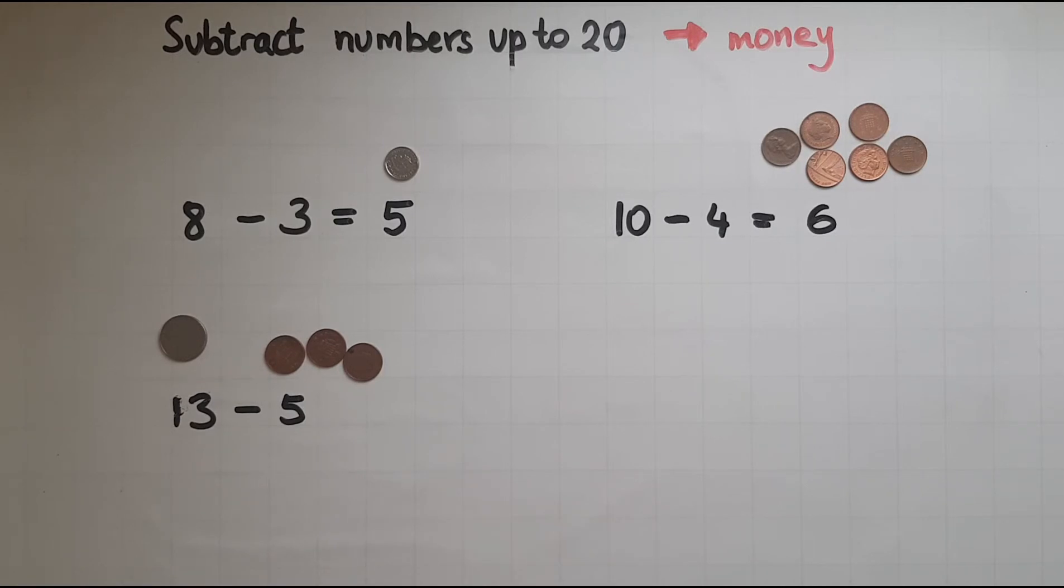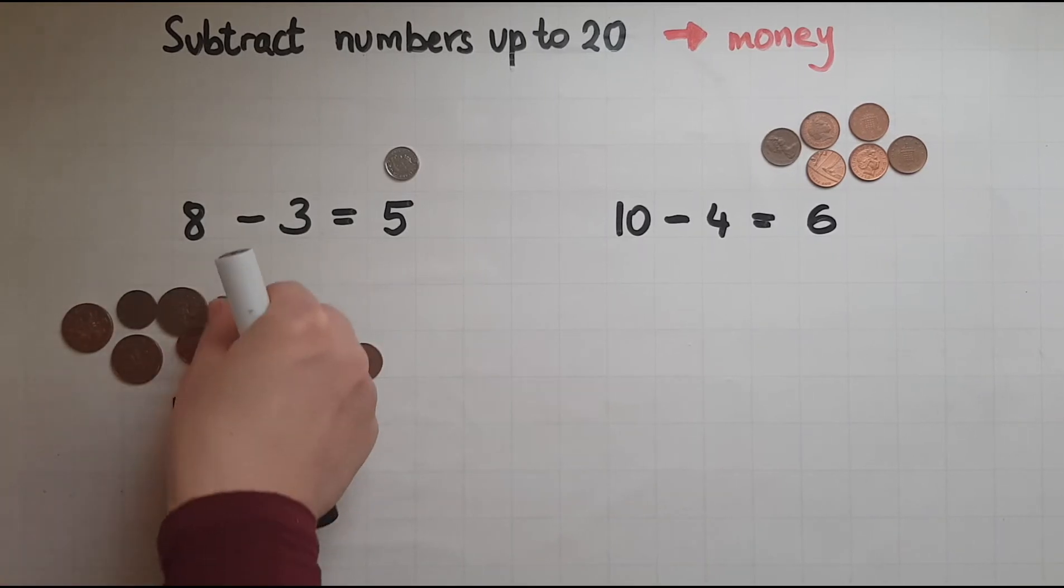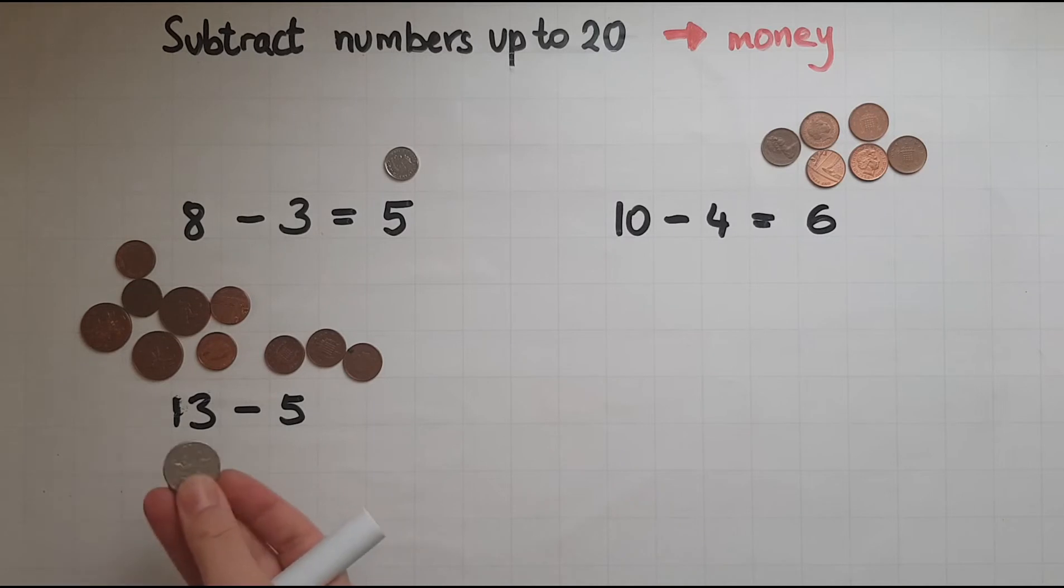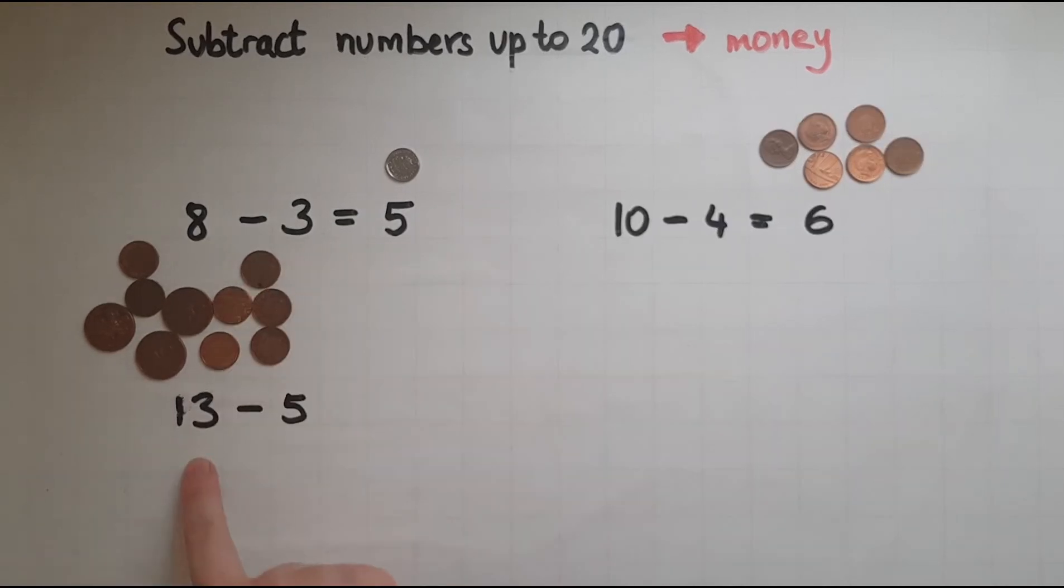So I will take away this and put 10: 2, 4, 5, 7, 8, 9, 10. So I've got 10 pennies inside of this. So 10 and the 3 makes 13 in total.